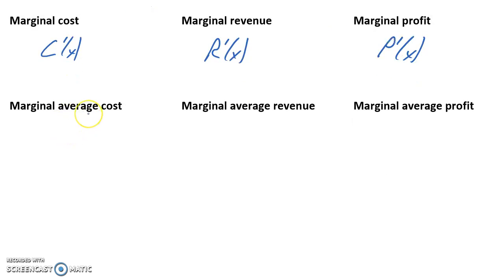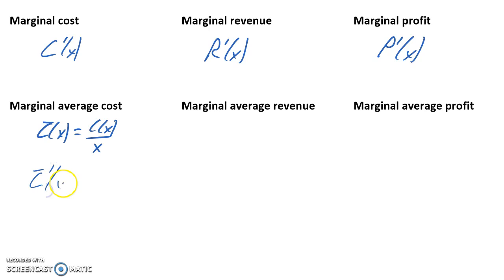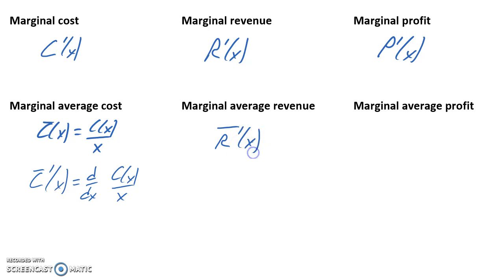We can also look at marginal average functions. Our average cost function is C(x) over x, with a similar pattern for average revenue and average profit. So our marginal average cost function would be the derivative of that average cost function — the derivative of C(x) over x. Similarly, we would have a marginal average revenue function, which is the derivative of our average revenue function, and a marginal average profit function, which is the derivative of our average profit function. We can look at any of these six different functions to determine what would happen to our cost, revenue, profit, or average cost, average revenue, or average profit if we increase production by one unit.